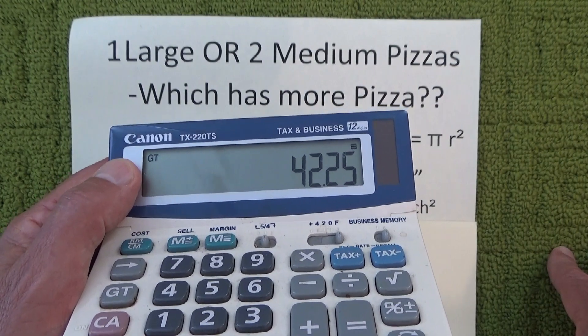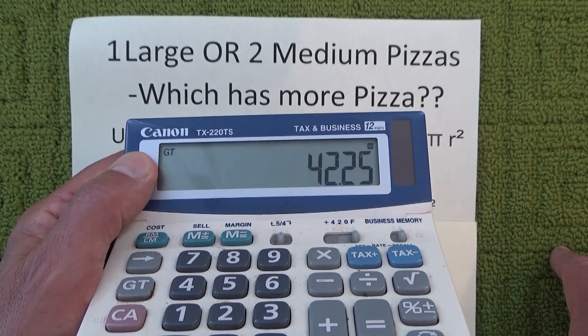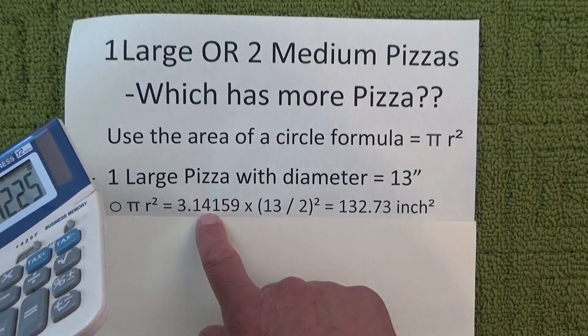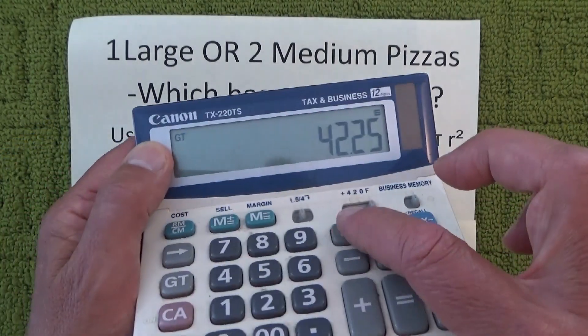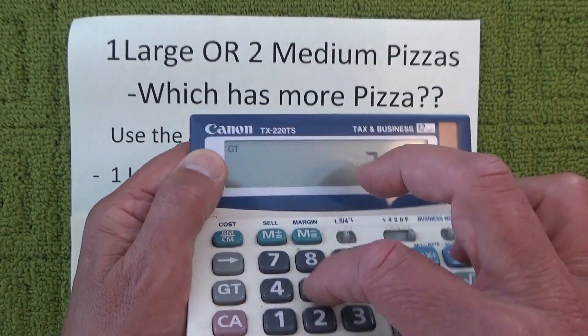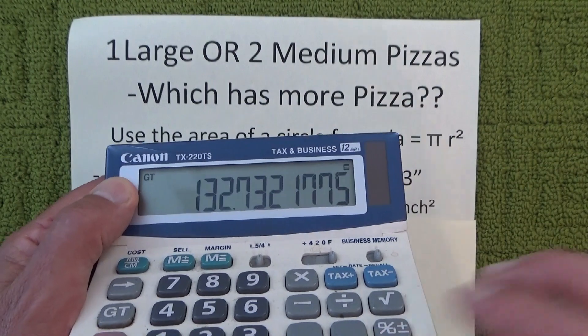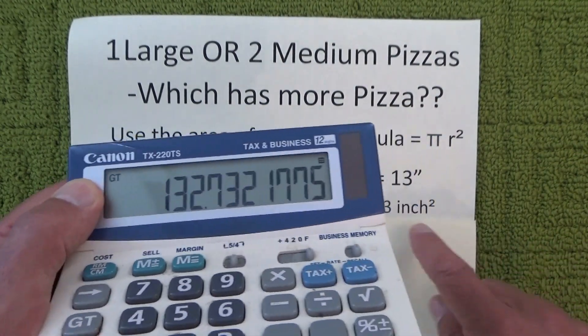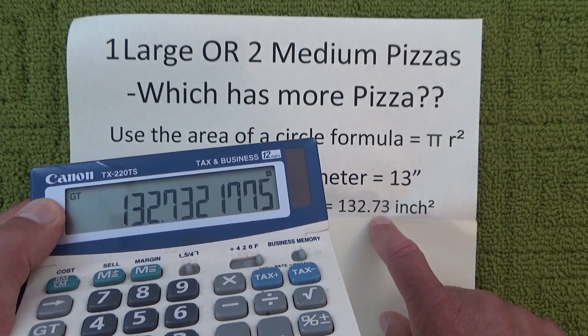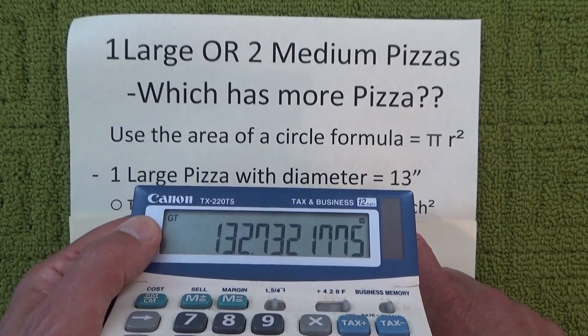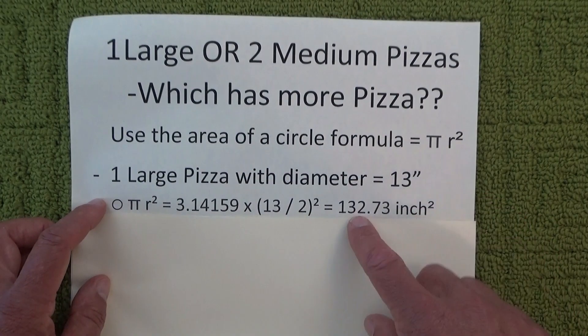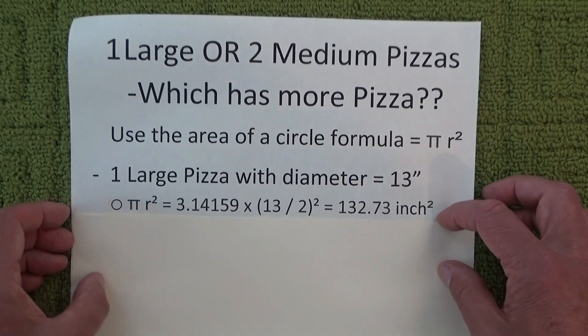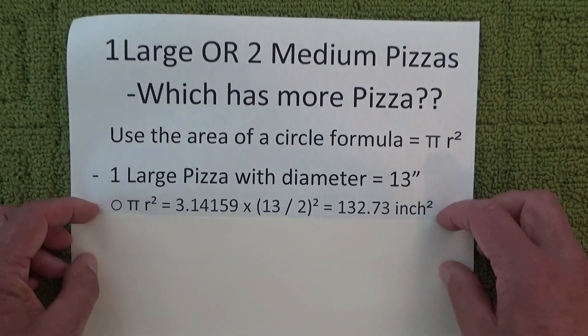That's 42.25, so that's the radius squared, and then we just need to multiply that by π, by 3.14159, and that gives us an answer of 132 square inches. So with one large pizza we have 132 square inches of pizza.